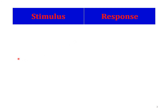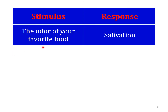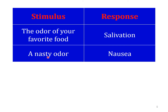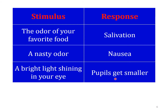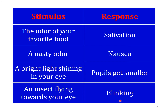For example, the odor of your favorite food causes salivation. The odor is the stimulus and salivation is the response — this combination is called the reflex mechanism. A very nasty odor will cause nausea. A bright light shining in your eyes — pupils get smaller, that is miosis. In the dark, pupils dilate — that is mydriasis. An insect flying toward your eyes — the response is blinking. These are common examples to understand the definition of the reflex.